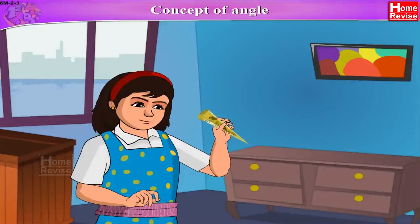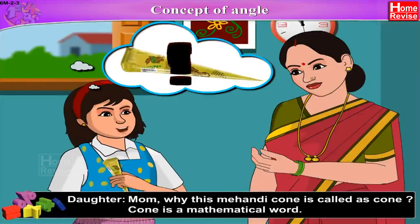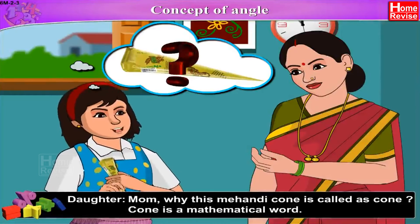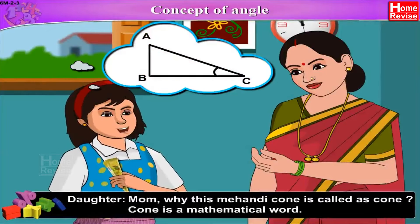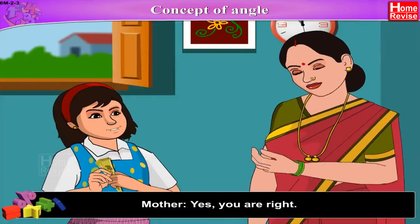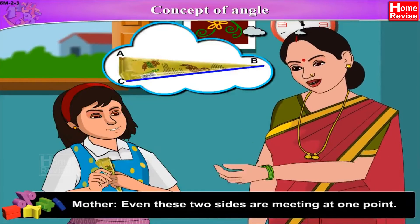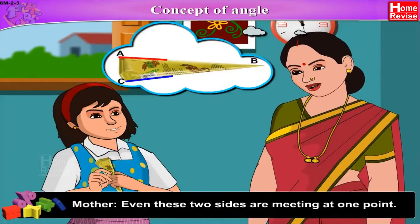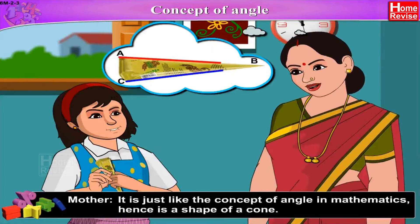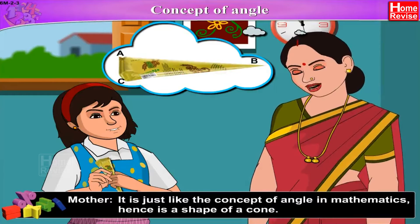Concept of Angle. Mom, why is this Mehndi cone called a cone? Cone is a mathematical word. Yes, you are right. Look at this Mehndi cone properly. These two sides are meeting at one point. It is just like the concept of angle in mathematics. Hence, it is the shape of a cone.